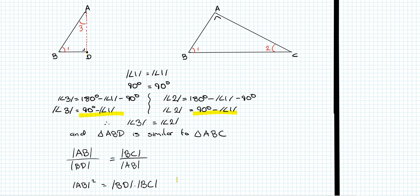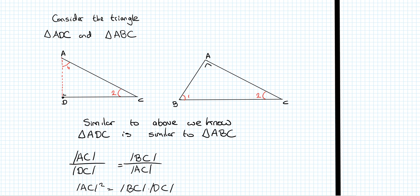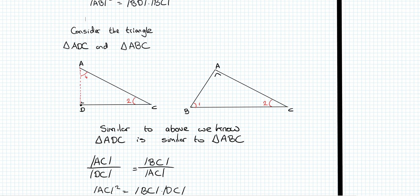Now we consider the medium triangle and the large triangle. We want AC squared, so the ratio is: hypotenuse over long length equals hypotenuse over long length. Multiplying both sides by AC and by DC, we get AC² = BC · DC.